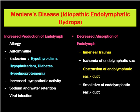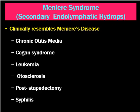Conditions due to decreased reabsorption of endolymph include inner ear trauma leading to fibrosis, ischemia of the endolymphatic sac, inability of the endolymphatic sac to contract and dilate, obstruction of the endolymphatic sac or duct by trauma or idiopathic conditions, and small congenital size of the endolymphatic duct or sac.